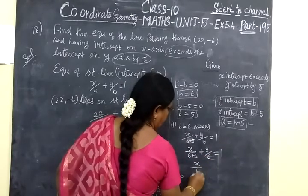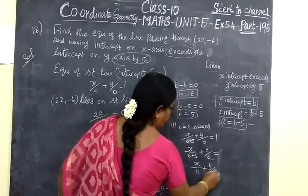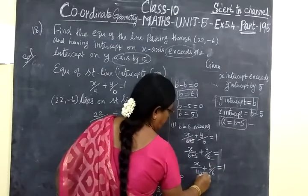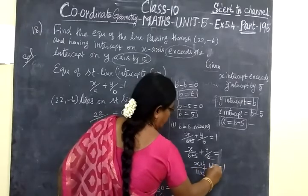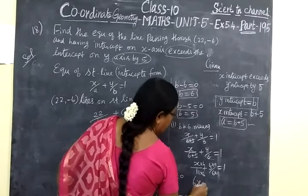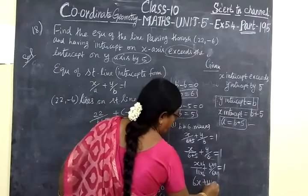Cross multiply: 6x plus 11y. The LCM is 66, so we have 6x plus 11y equals 66.